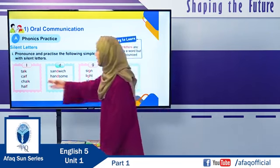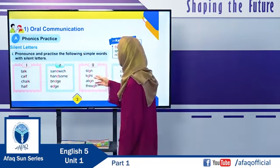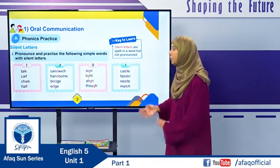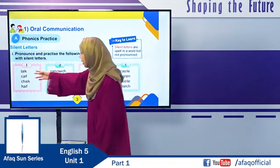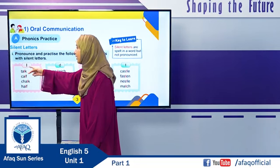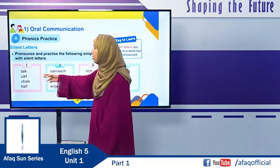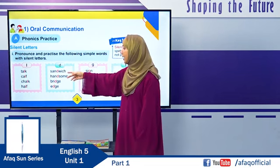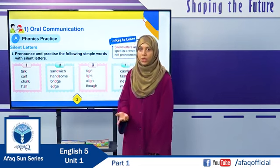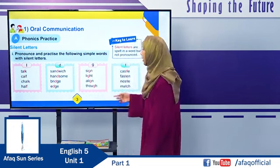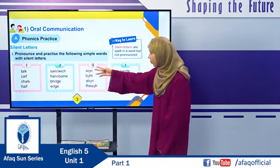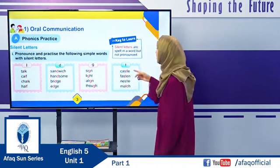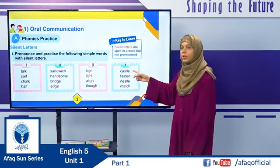Now read more words with silent letters on page 3. Silent letters can be L, D, G, and T. For example, in 'talk,' L is a silent letter. D is a silent letter in 'sandwich.' G is silent in 'sign,' and T is silent in 'castle.' Read all these words and then come back.